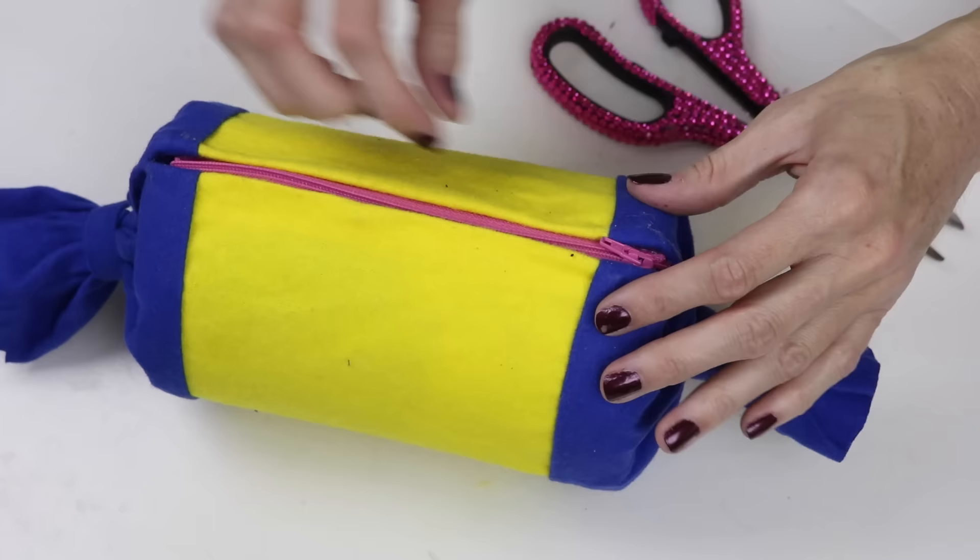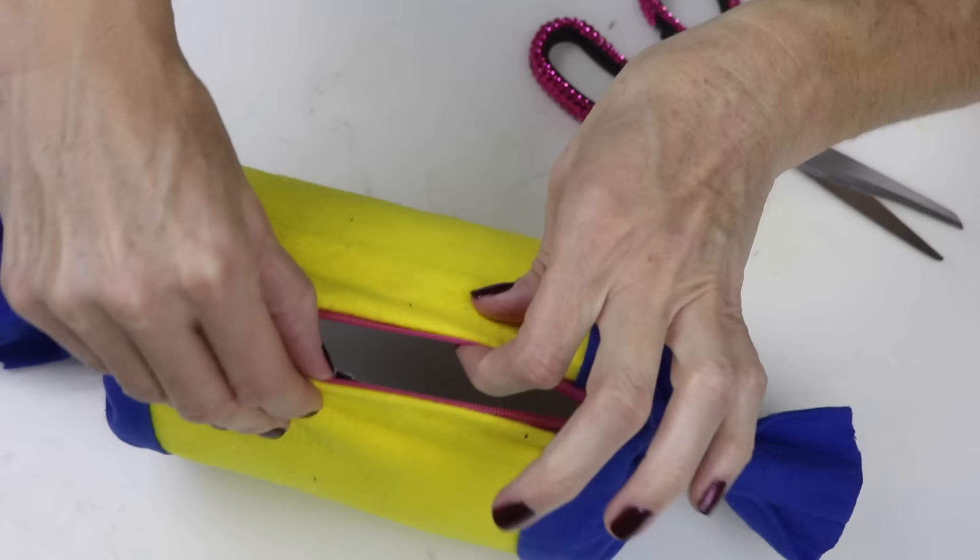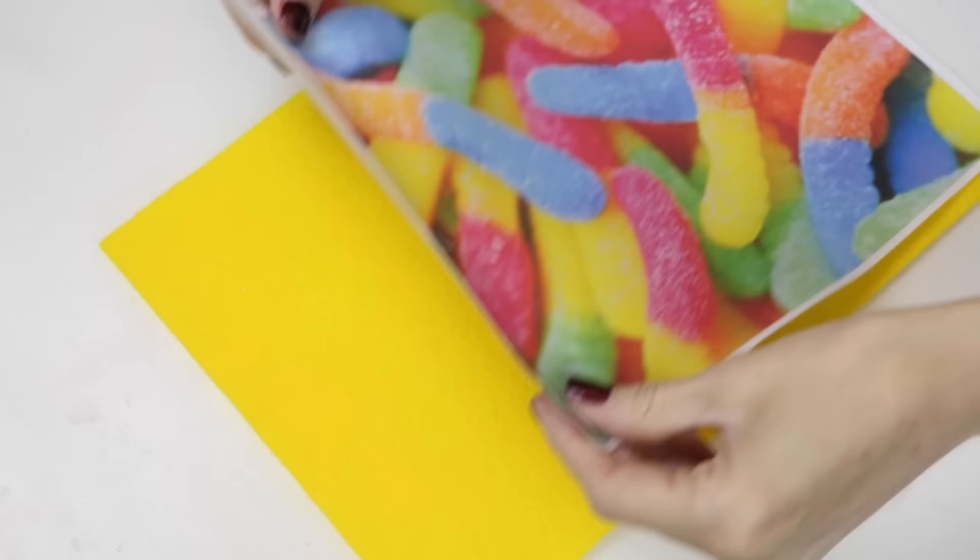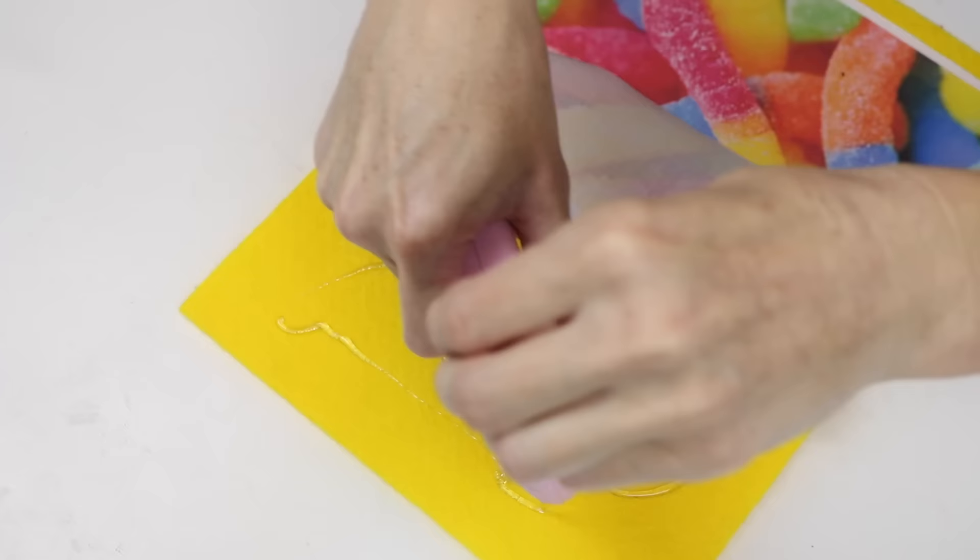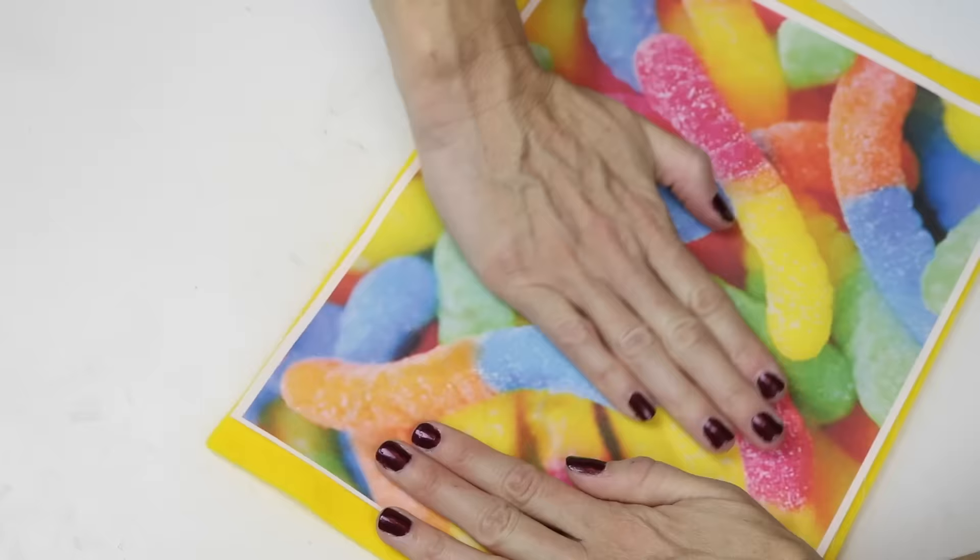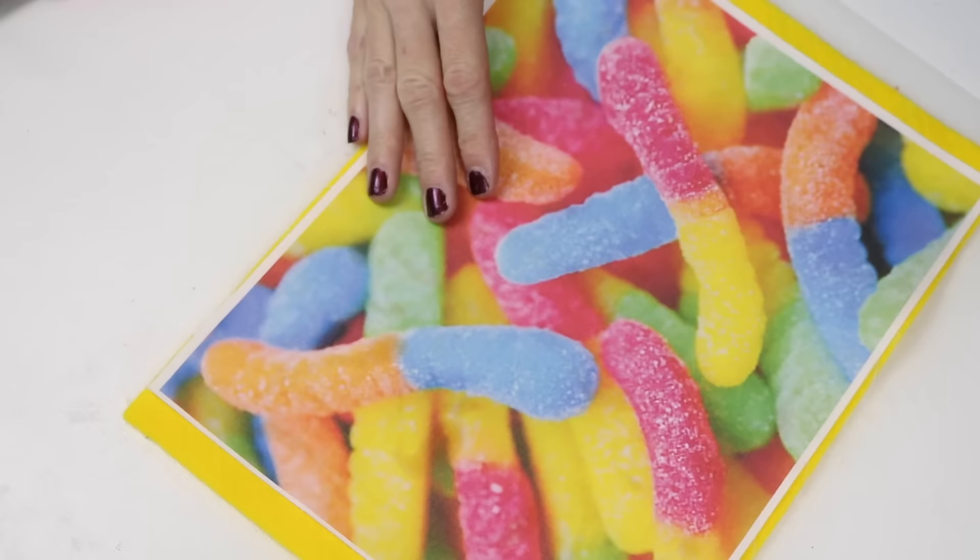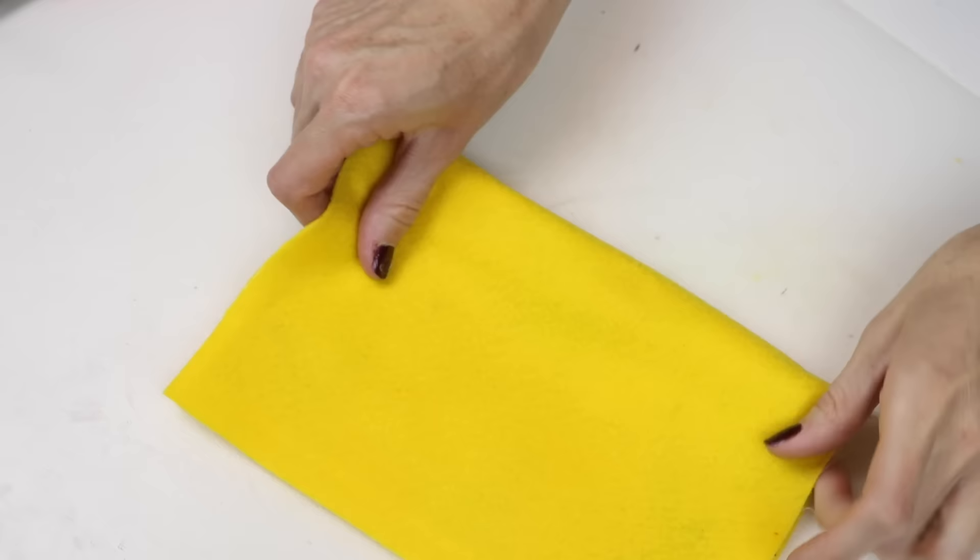The last one I'm going to show you is the gummy worms bag. You will need some inkjet fabric sheets. Print out a gummy worm picture onto that and a piece of felt. Peel off the fabric sheet, place that onto your felt, then glue that to the felt. Fold that in half and then cut it.